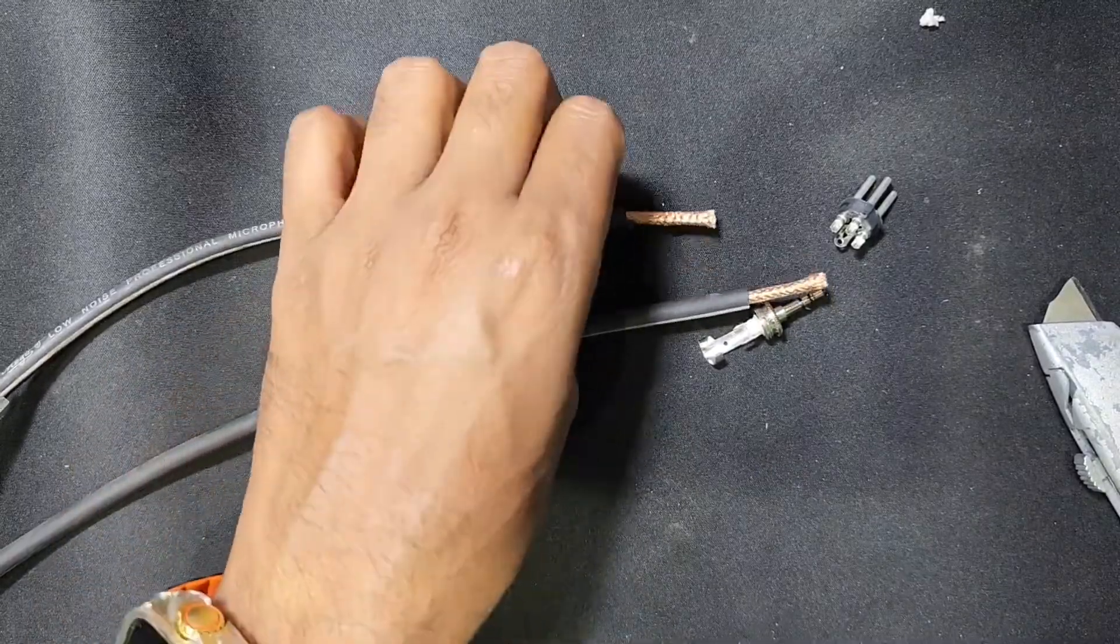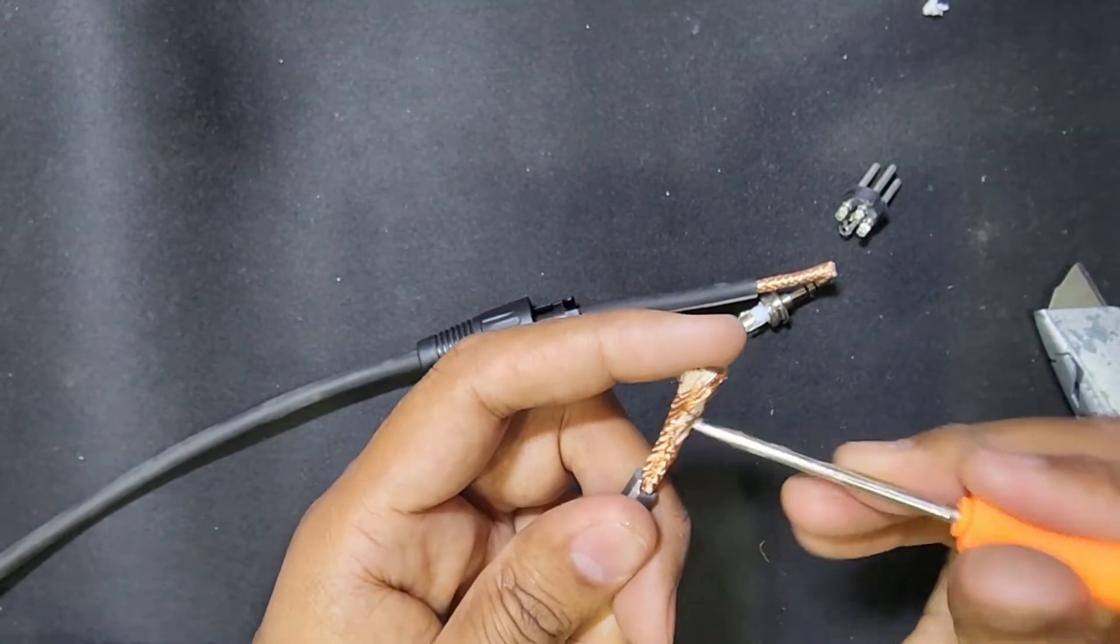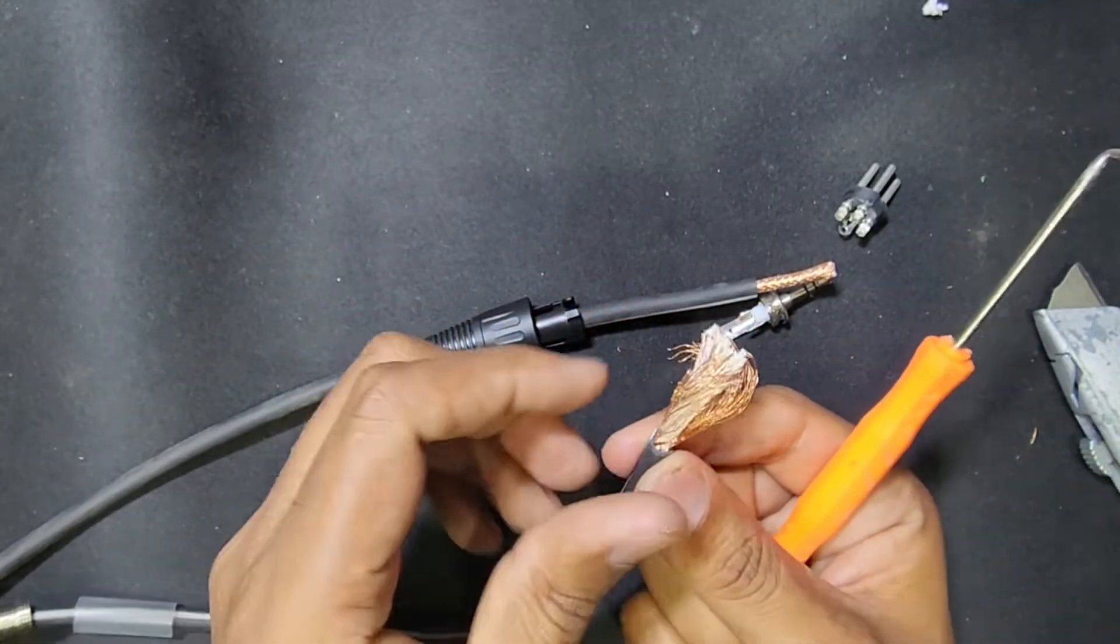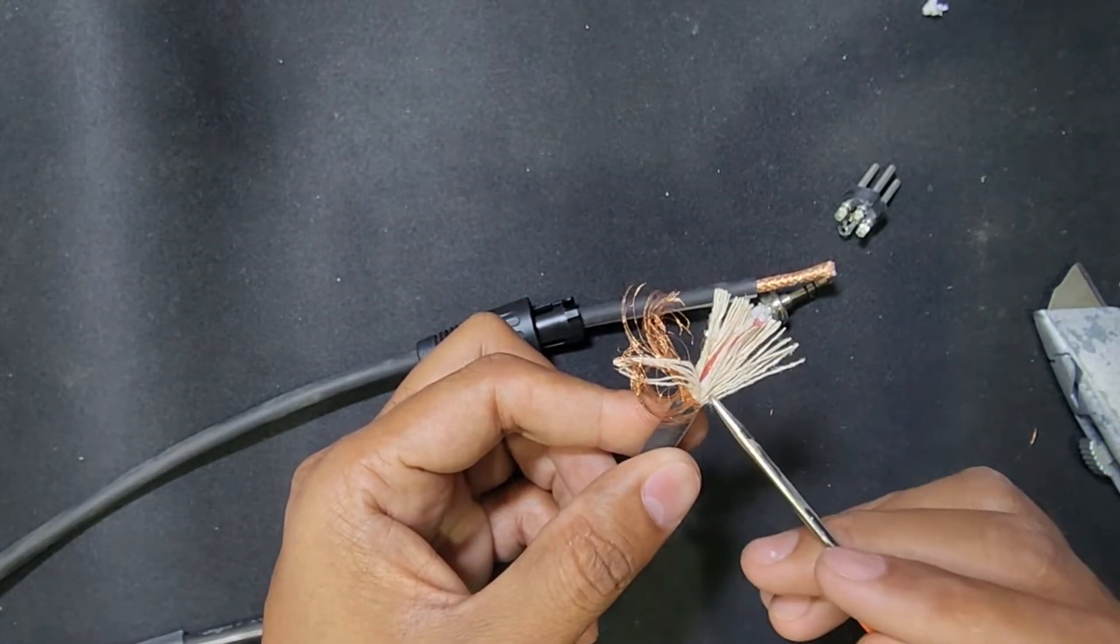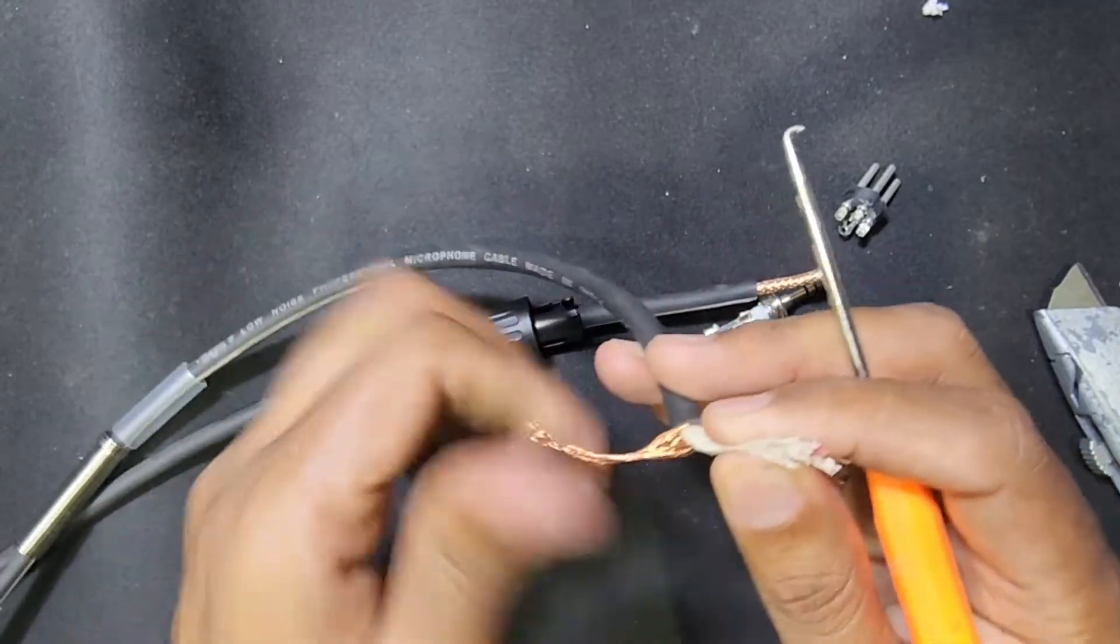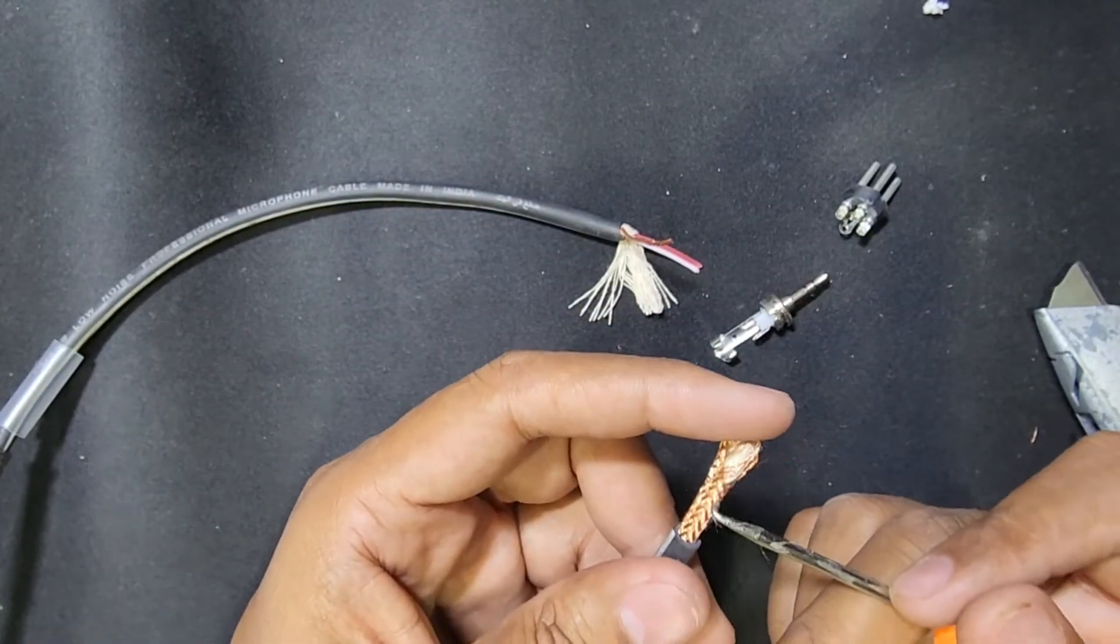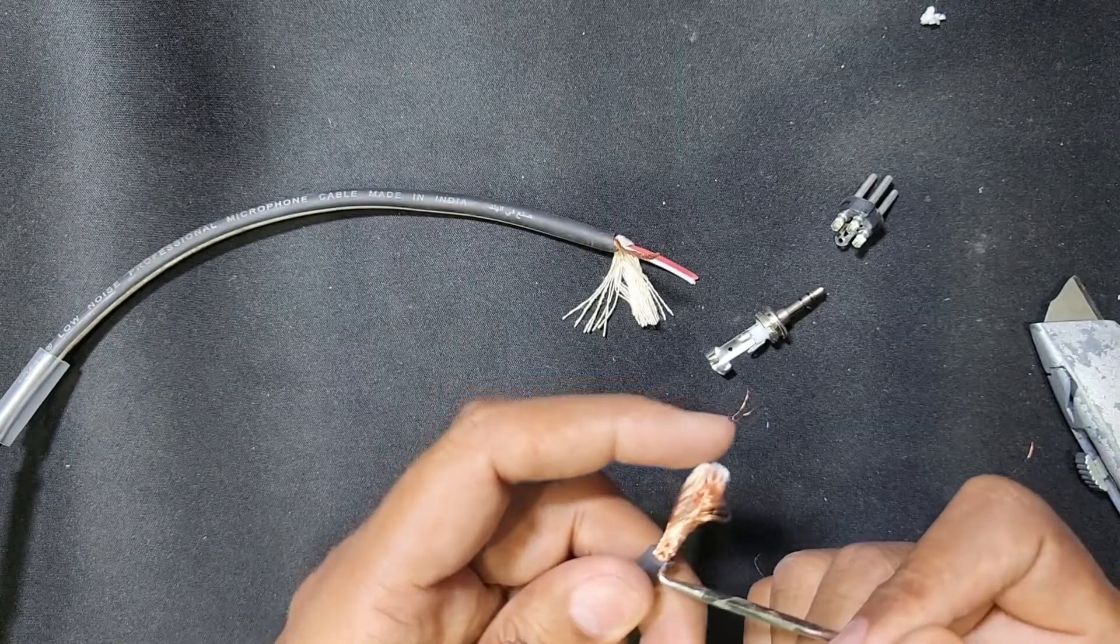I have to open the wire, so now I remove and separate the wires. This is the ground. I'll twist the ground strands together and cut the extra cotton. I'll do the same here.